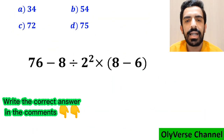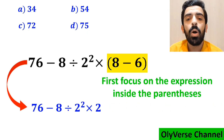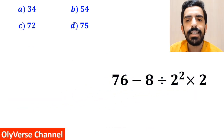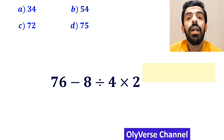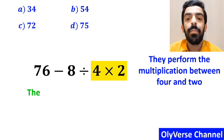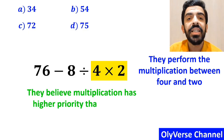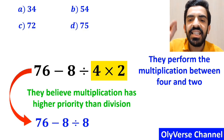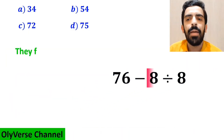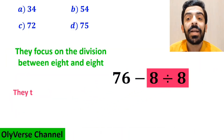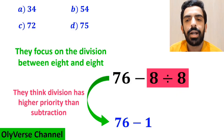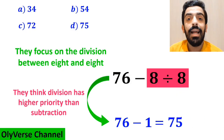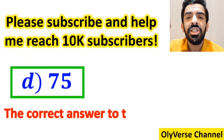Also, some other people, when solving this question, first focus on the expression inside the parenthesis and replace the whole expression with 76 minus 8 divided by 2 to the power of 2, multiplied by 2. In the next step, they go to the exponent and simplify to 76 minus 8 divided by 4 multiplied by 2. Then they perform the multiplication between 8 and 2, believing multiplication has higher priority than division, rewriting the expression as 76 minus 8 divided by 8. In the final step, they focus on the division between 8 and 8, rewriting as 76 minus 1, which gives them the answer 75.